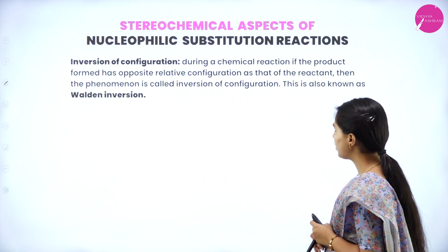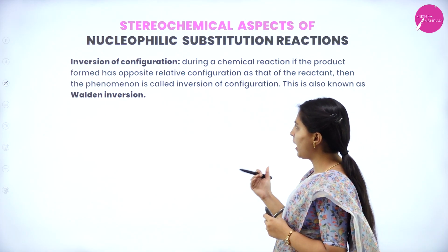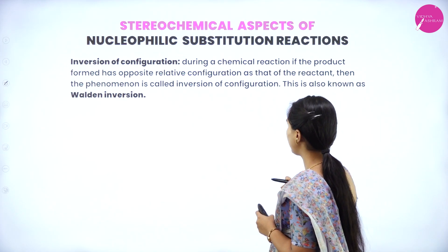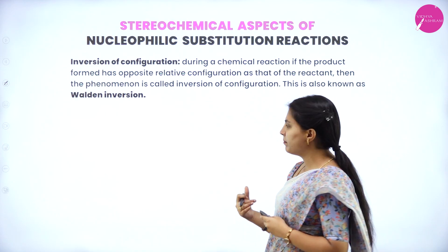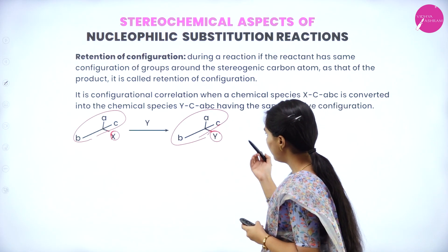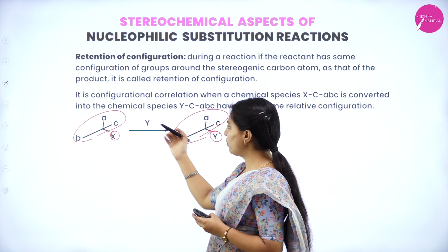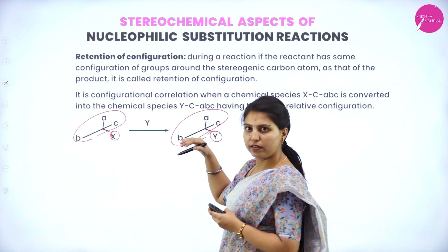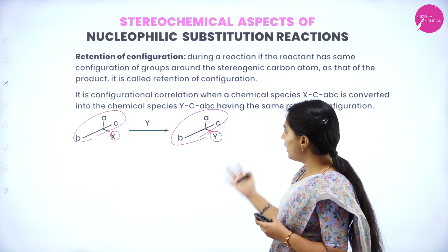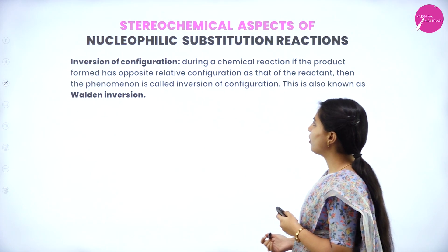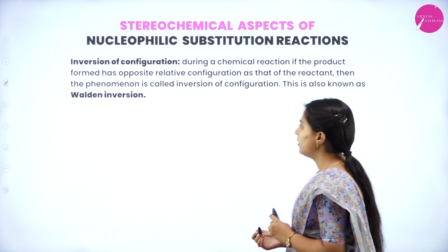Inversion of configuration: during a chemical reaction, if the product formed has the opposite relative configuration compared to the reactant. In retention the configuration is same, but in inversion it is reversed — the configuration has been turned to the reverse. That configuration change is called inversion of configuration, also called Walden inversion.